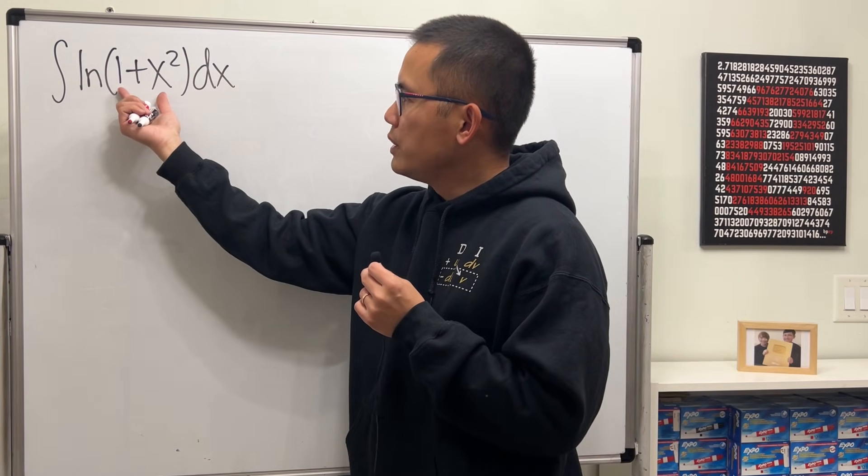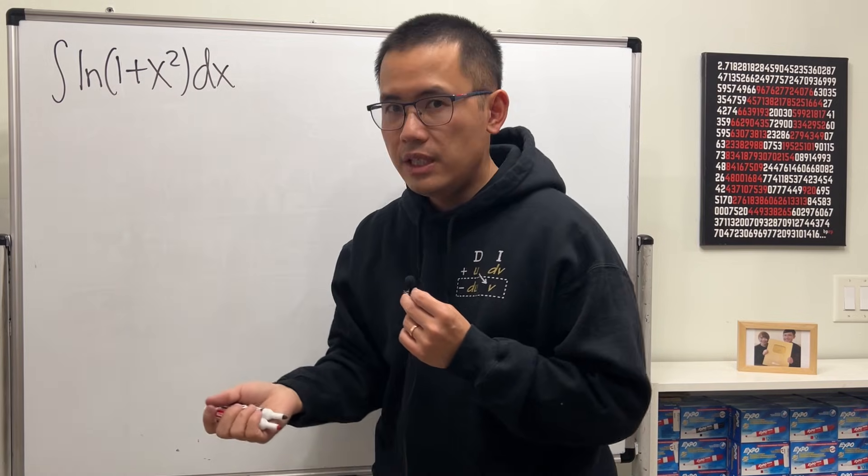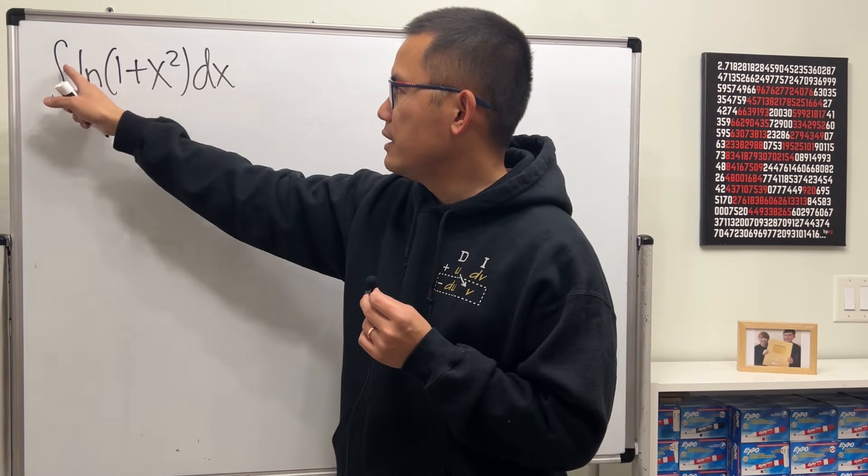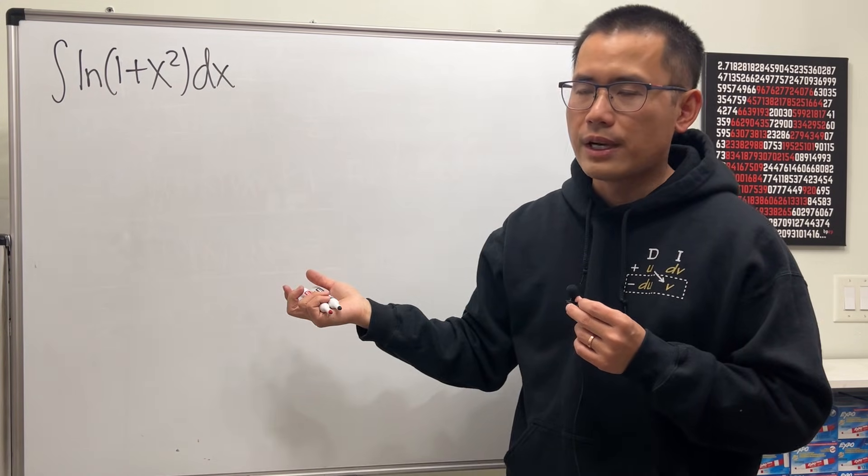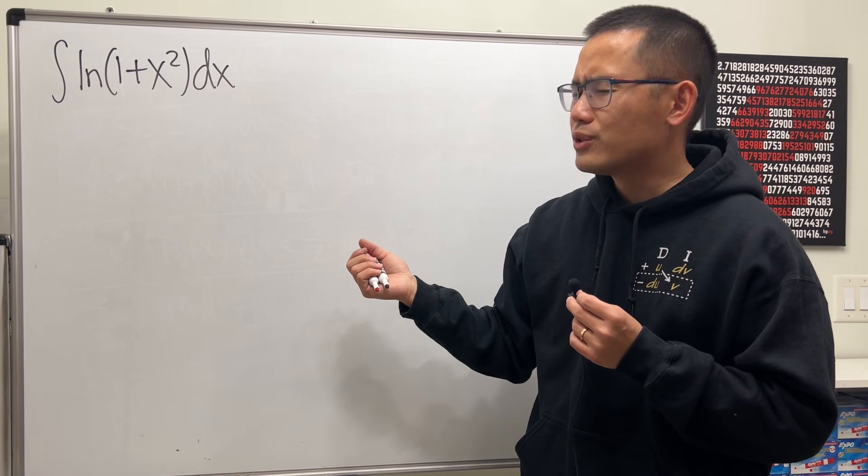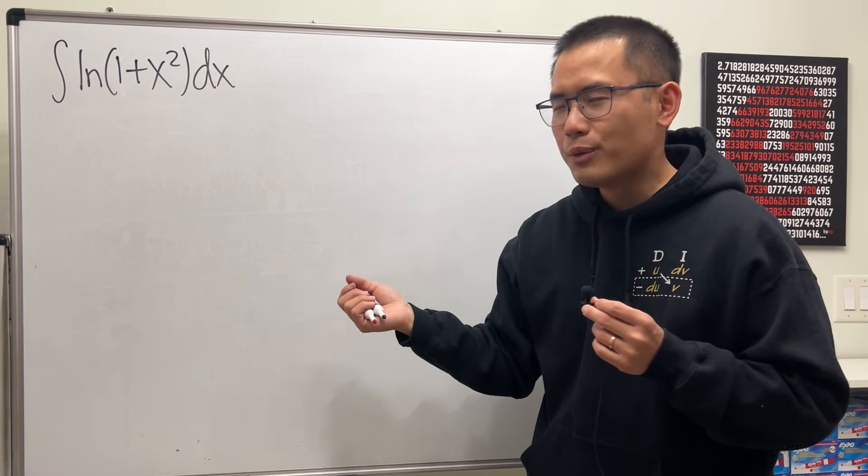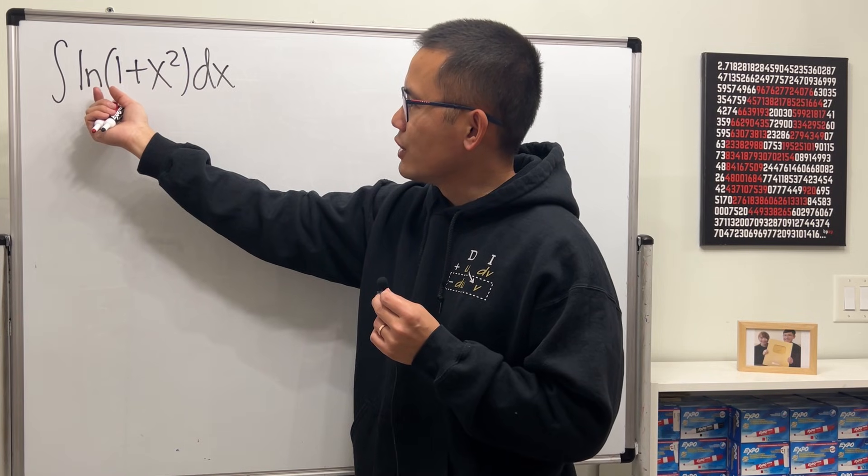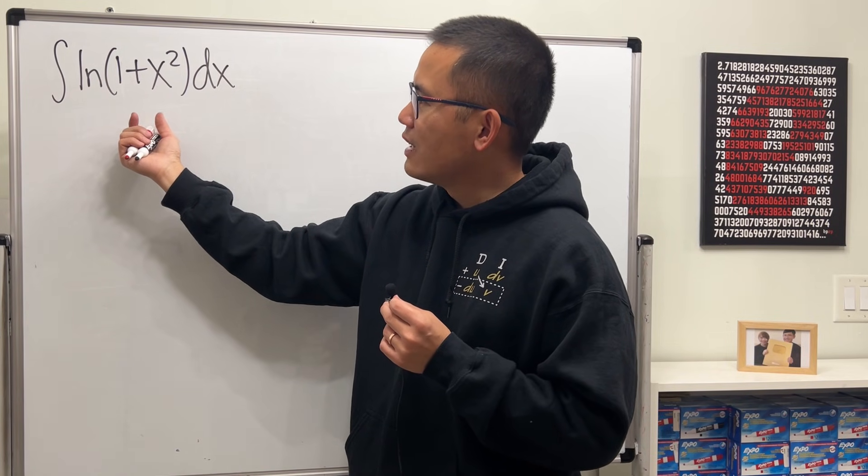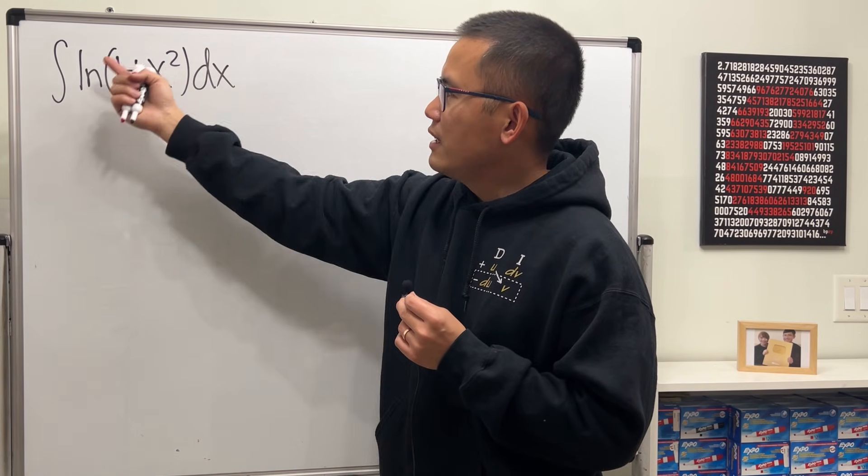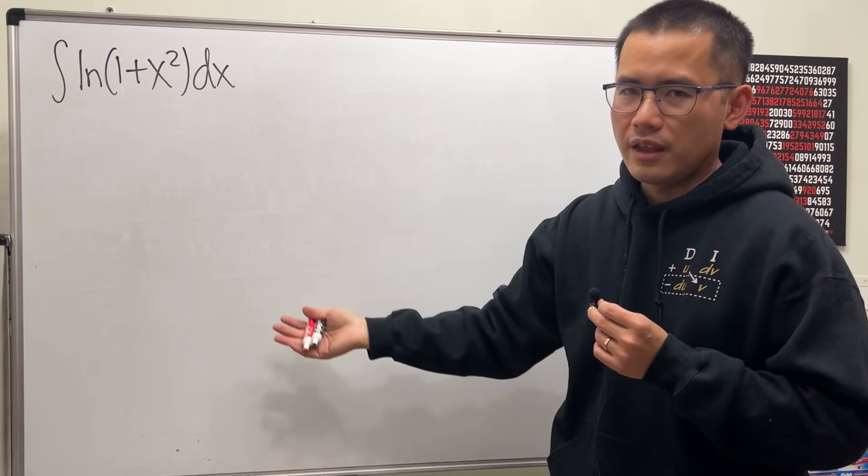Because if you put u to be 1 plus x squared, du is 2x, but we do not have any x right here to help us cancel that out. And if you want to use trig sub, do you really want to put a trig function inside of a natural log function? And the worst thing is that I don't think there's anything else that can help us cancel out the extra things either.